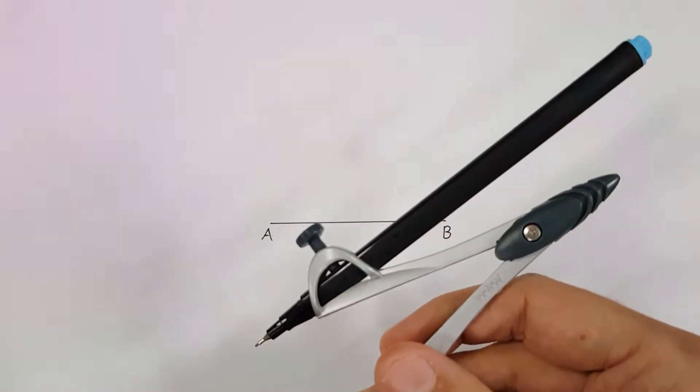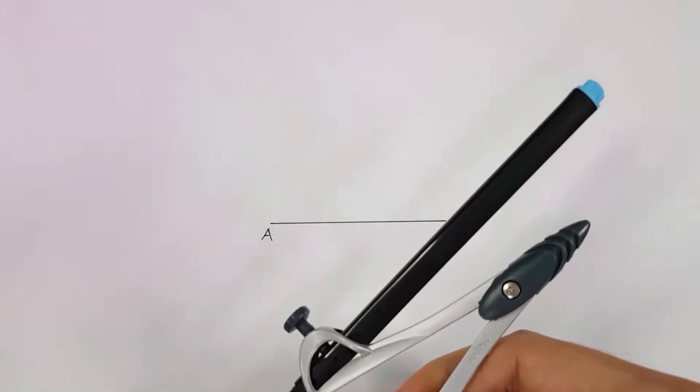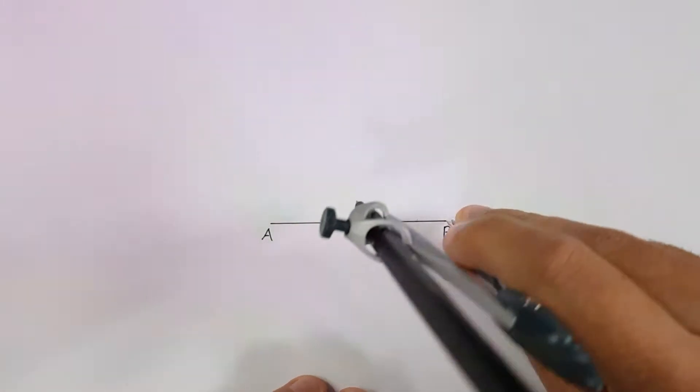For the purpose of this video I will use the given line AB. You will require your compass to do this method. I will use a blue pen to show my construction lines.